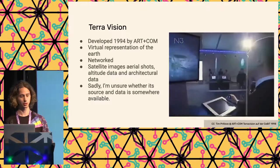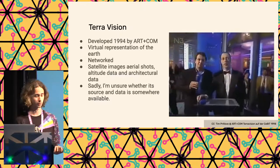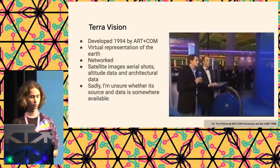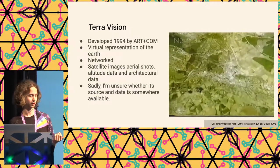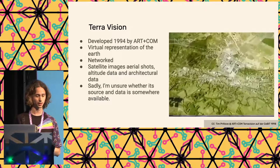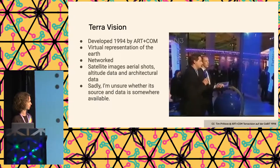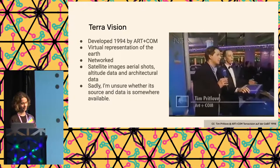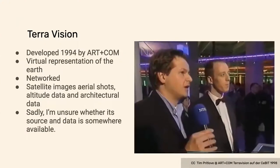which actually was developed in Germany at the start of the 90s. It was the first virtual representation of the world. It was already networked. It allowed you to browse all the satellite images of the world. And here on the right you can see one — you may know this person, he's also related to the CCC. This all started in Germany.